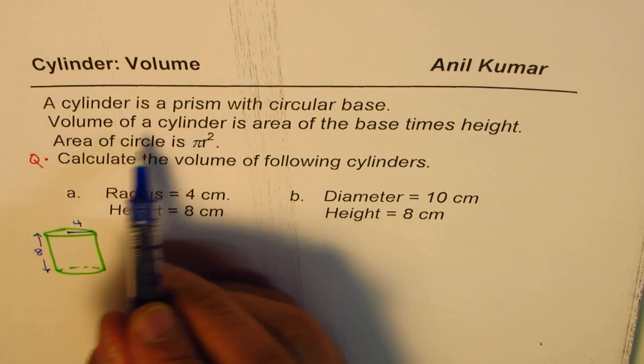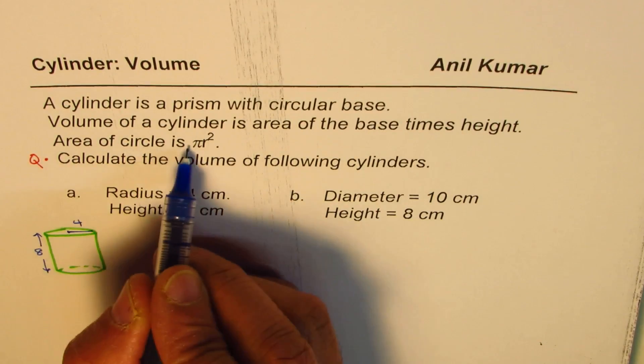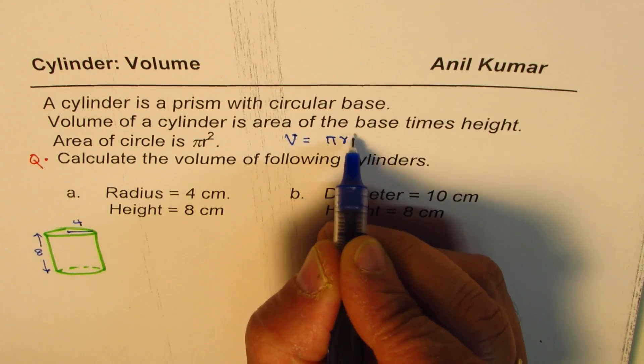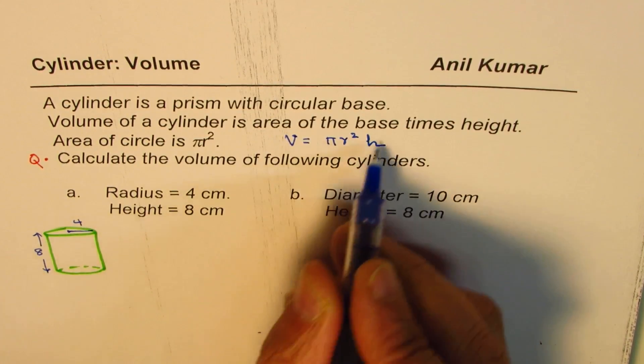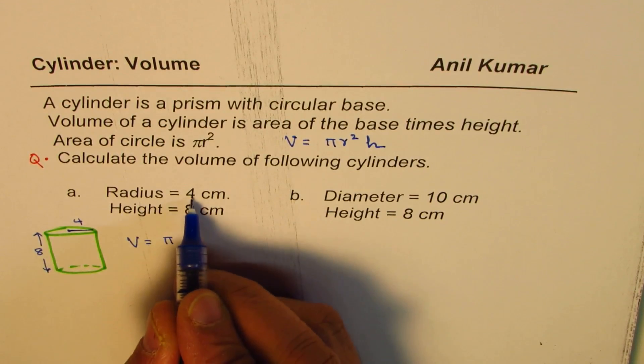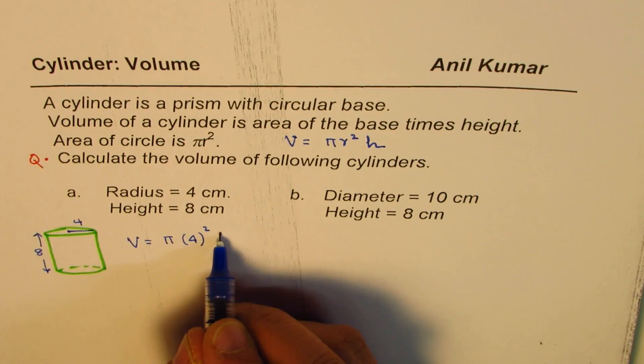We are given volume of a cylinder is area of base times height. And area of base is pi r squared. So volume can also be written as pi r squared times height. So that's the formula which we are going to use. Volume is pi, r is 4 for us, 4 square, and height is 8.